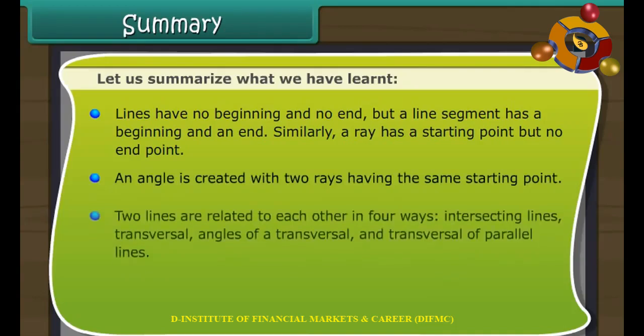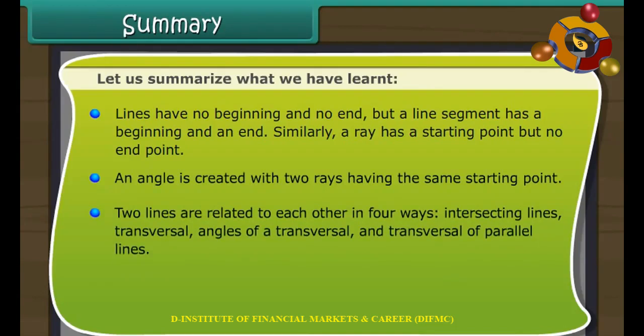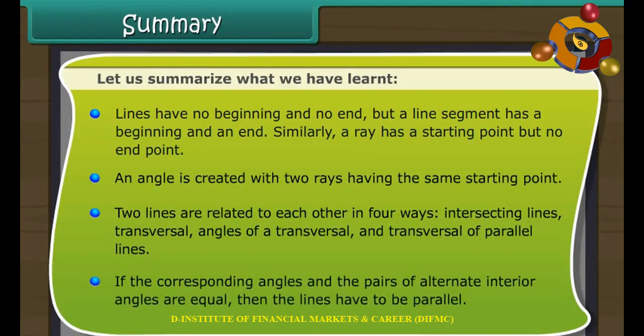Two lines are related to each other in four ways: intersecting lines, transversal, angles of a transversal, and transversal of parallel lines. If the corresponding angles and the pairs of alternate interior angles are equal, then the lines have to be parallel.